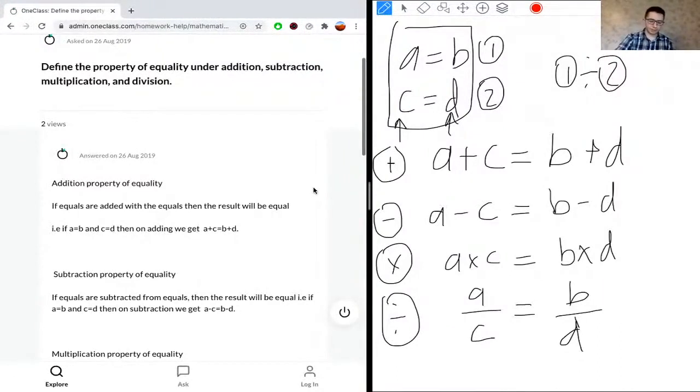If you're doing it the other way around, if you're dividing 2 divided by 1, then these two would flip and these two would flip. So you would get c over a equals d over b.